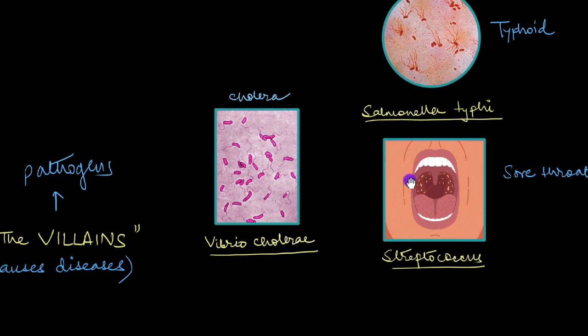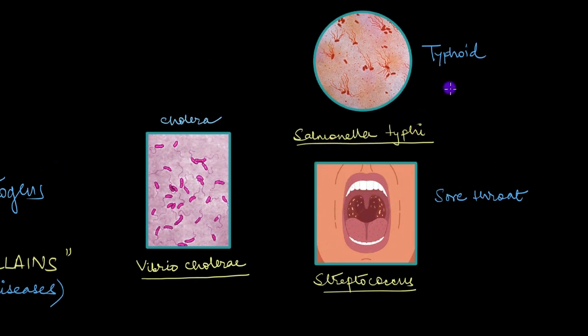A few other diseases include typhoid and sore throat. Let's bring those into focus a little bit over here. Now, typhoid is caused by this bacterium called Salmonella typhi, which is spread through contaminated food. Sore throat, on the other hand, is caused by a bacteria called Streptococcus. And when somebody suffers from sore throat caused by Streptococcus, their throat turns white, kind of like this.